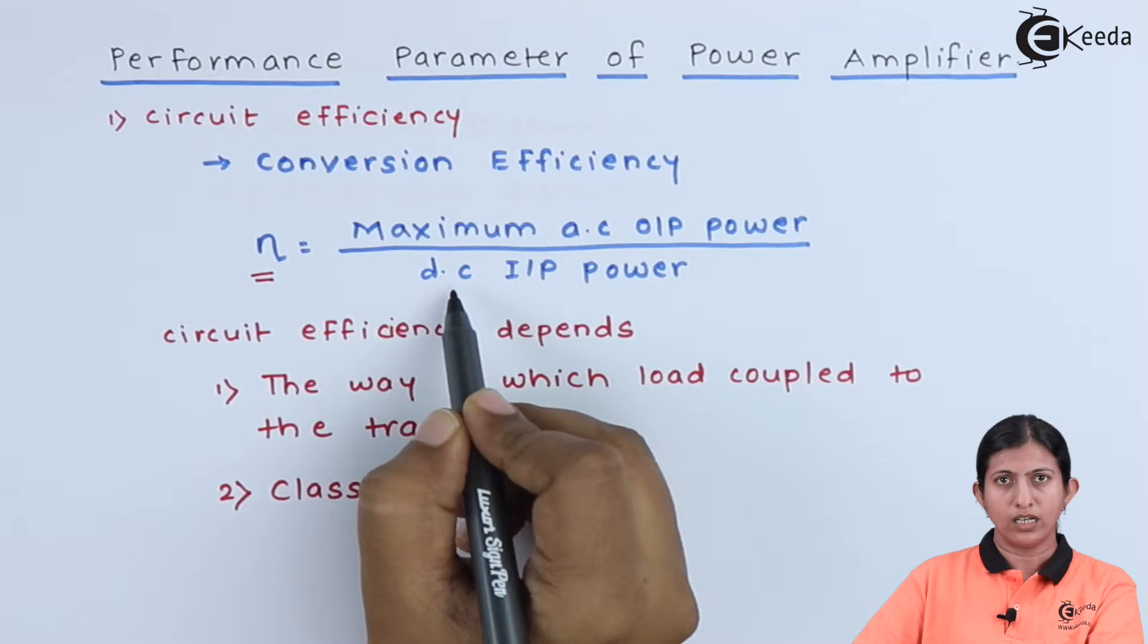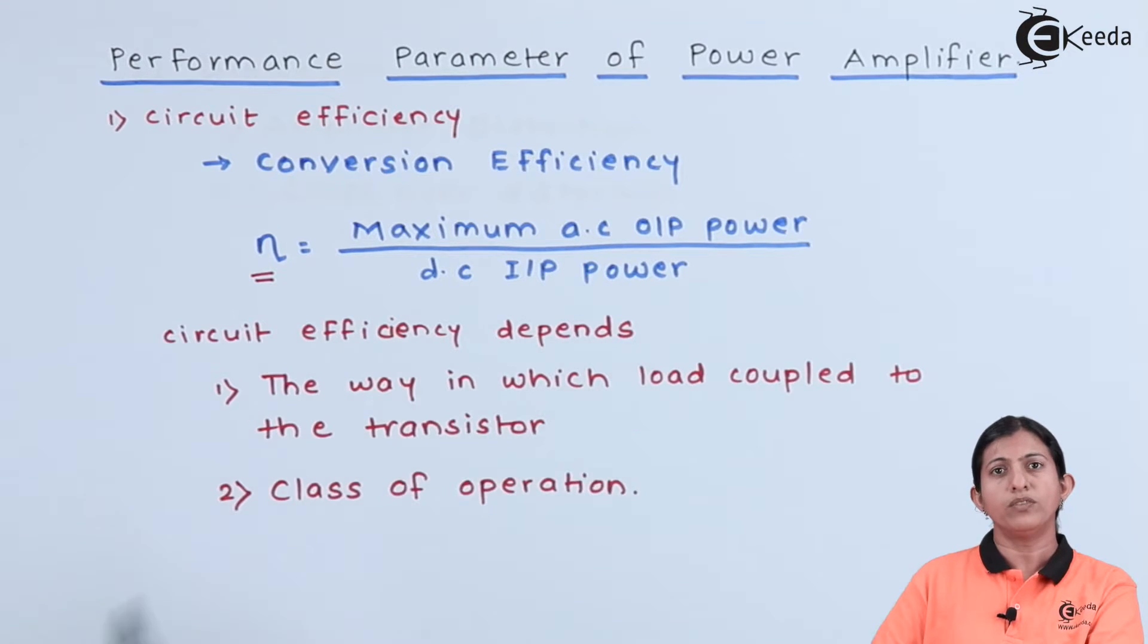This DC input power is taken from the DC supply connected in the output circuit. Circuit efficiency depends upon two parameters: the way in which the load is coupled to the transistor, whether directly coupled or transformer coupled, and the second parameter is class of operation.